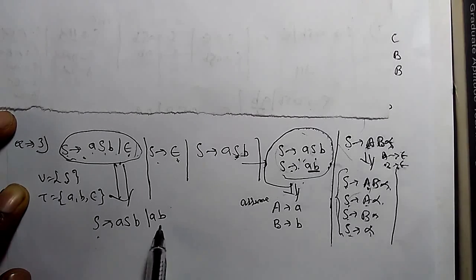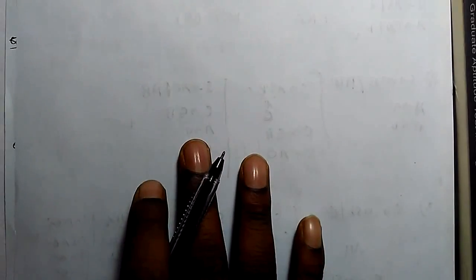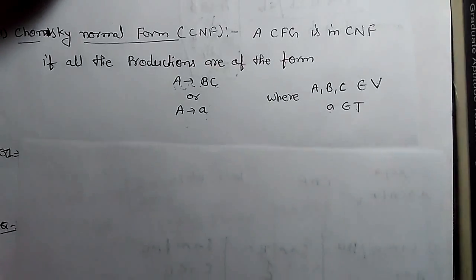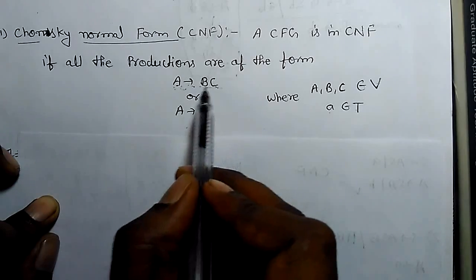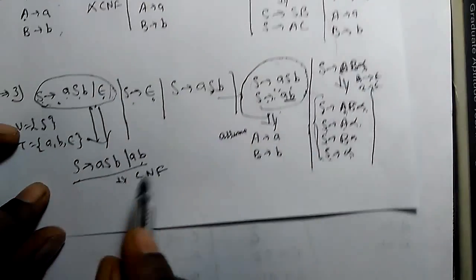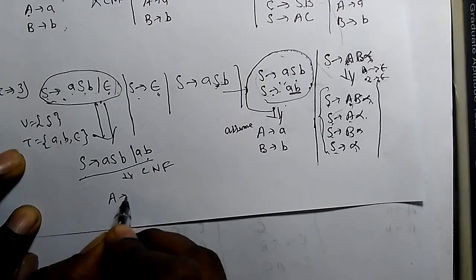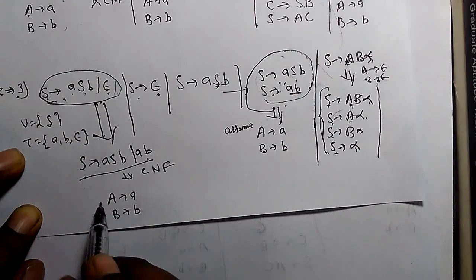Now we have to convert this grammar into CNF. For CNF, the definition is either one variable derives two variables, or one variable derives one terminal. So for this, let's assume A derives a and capital B derives b. Two extra variables we have assumed.